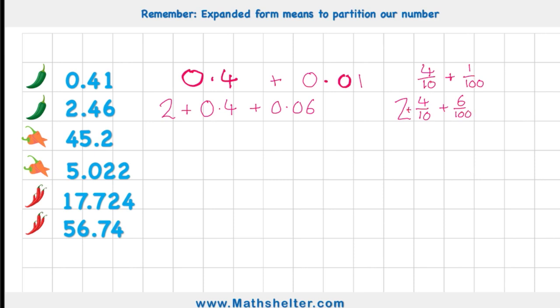Let's step it up to an orange chilli challenge, 45.2. Well, at 45.2, I'd have 40 plus 5 plus 2 tenths, which would be 0.2. Or in other words, 40 plus 5 plus 2 tenths as a fraction.